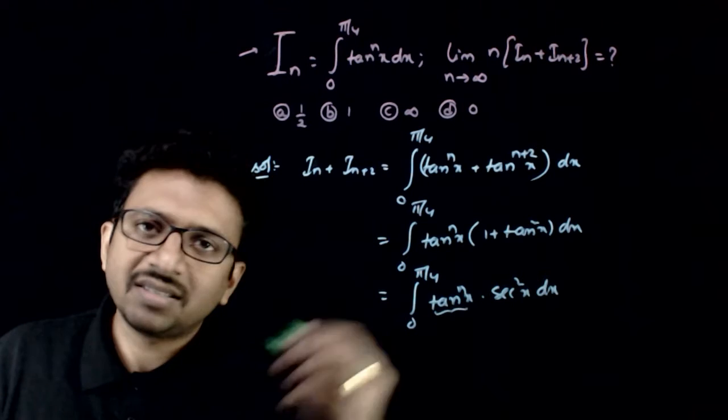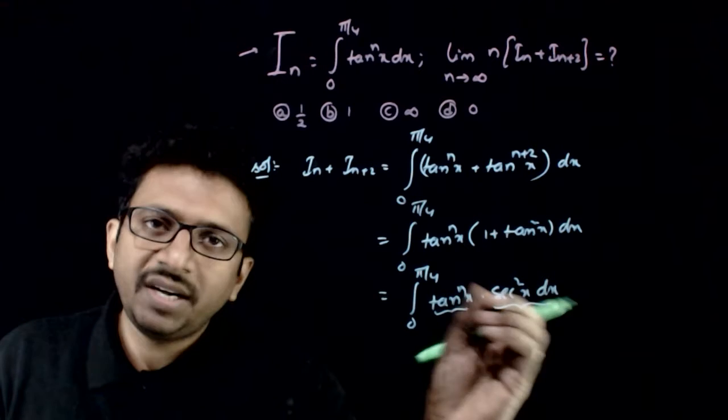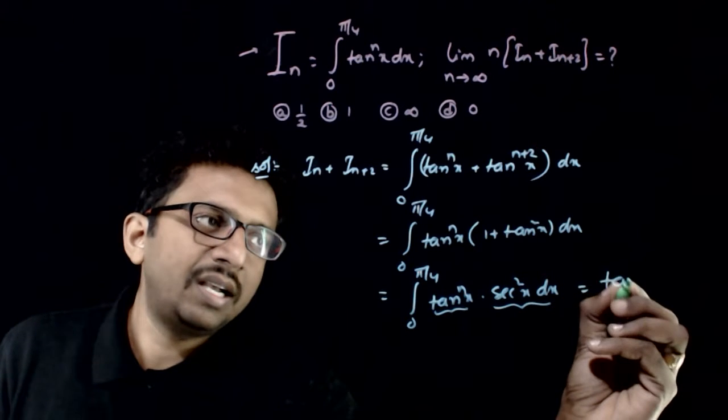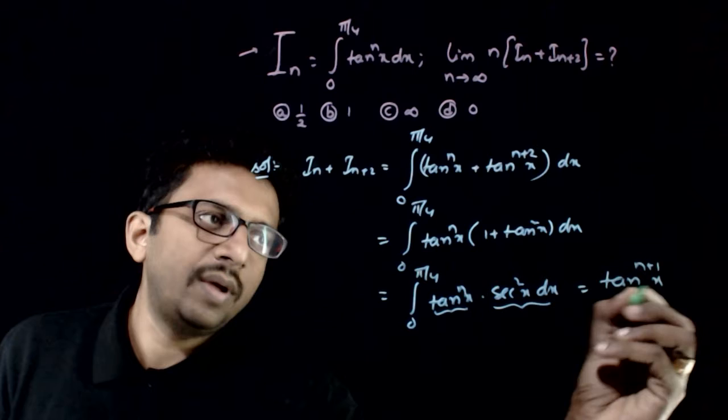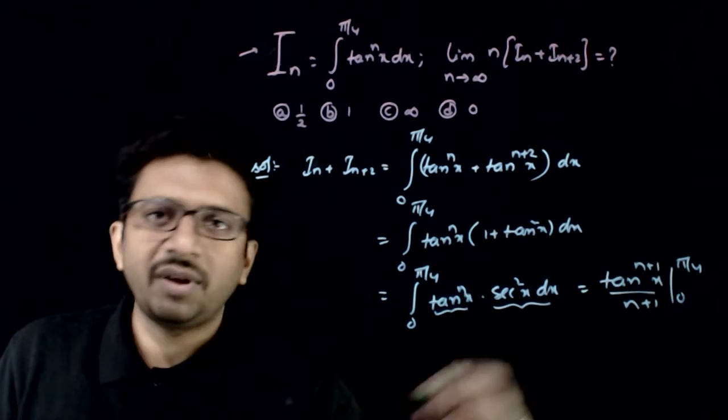Now if you put tan x equals t, this becomes dt. So we have t to the power n dt, that is nothing but tan to the power n plus 1 times x by n plus 1 going from 0 to pi by 4.